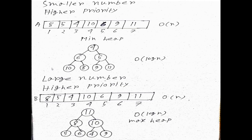We are using heap data structure to implement the priority queue. Why? Because if we use a normal array, insertion and deletion in the worst case takes order of N comparisons — O(n) time. This is hugely time-consuming.